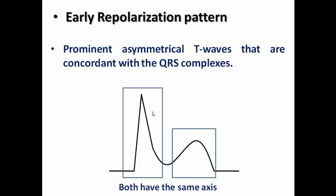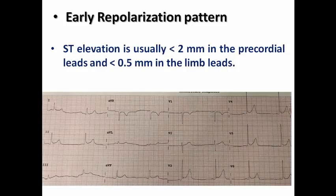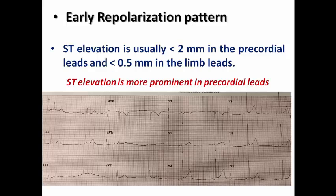Another criterion is prominent asymmetrical T-waves that are concordant with the QRS complex — both at the same axis. You would not see T-wave inversion, biphasic T-waves, or hyperacute T-waves in early repolarization pattern; instead, you see concordant asymmetrical T-waves with normal amplitudes. Additionally, the magnitude of ST elevation is less than 25% of the T-wave amplitude, meaning it is usually less than 2 mm in precordial leads and less than 0.5 mm in limb leads.